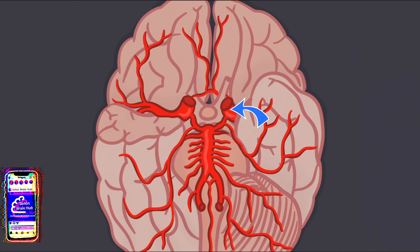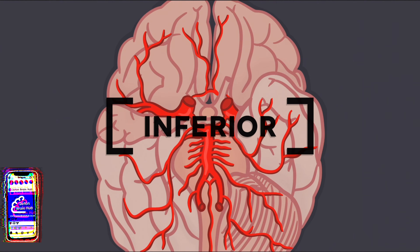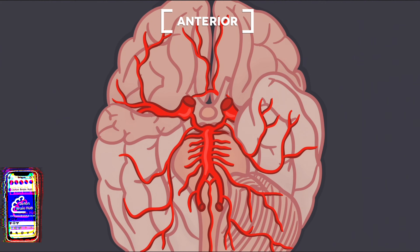Let's orientate ourselves with the image on the screen. We're looking at the underside of the brain — the top of the screen represents the front of the brain and the bottom of the screen represents the back. I will now go through each artery that makes up this anatomical structure.